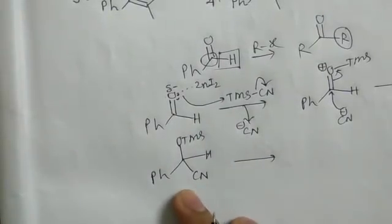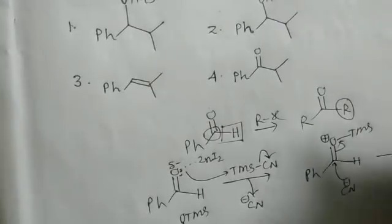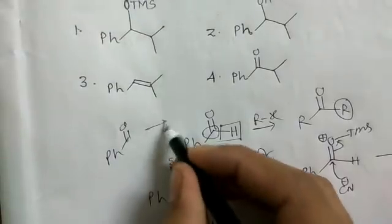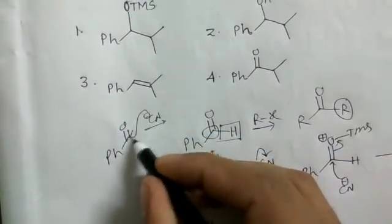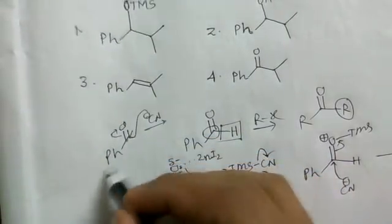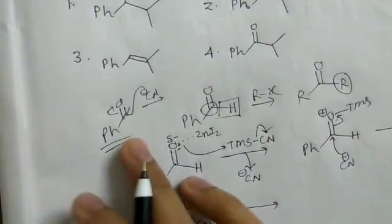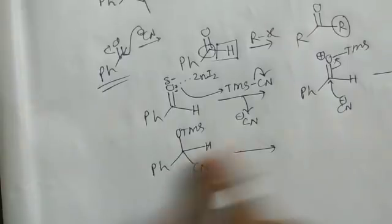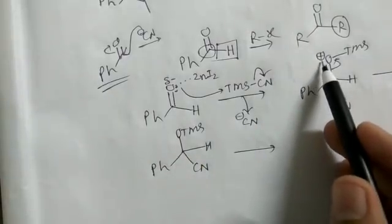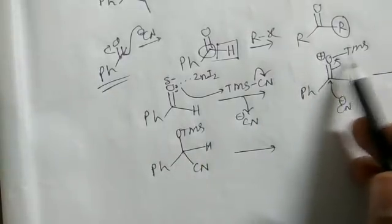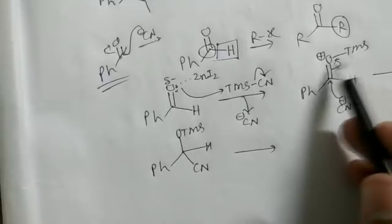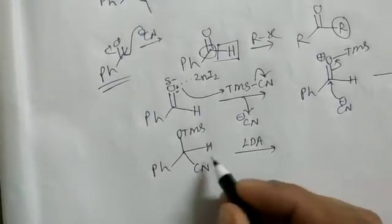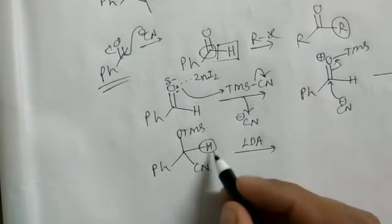This intermediate is the same type that forms during benzoin condensation, where benzaldehyde is treated with cyanide. The attack of cyanide is even more facilitated here because the positive charge on oxygen due to TMS coordination activates the system. Now LDA is added, which deprotonates at the carbon bearing the cyanide.